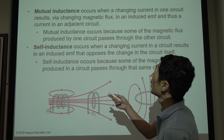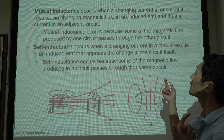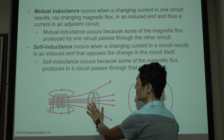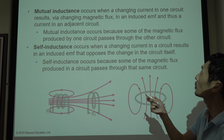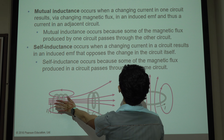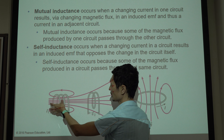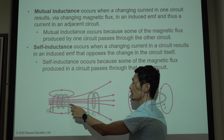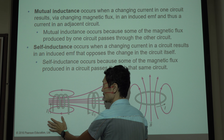Mutual inductance occurs when a change in current in one circuit results in a change in magnetic flux and an induced voltage and current in an adjacent circuit. Mutual inductance occurs because some of the magnetic flux produced by one circuit passes through the other circuit. Here, with a changing current in one circuit, the magnetic field changes, some of that flux passes through the other circuit, and so changing the current in one circuit also induces current in the other.